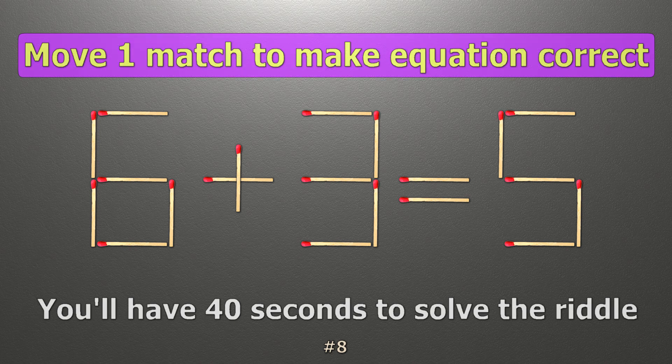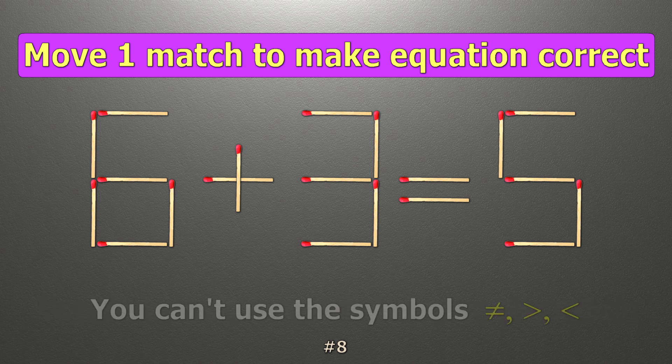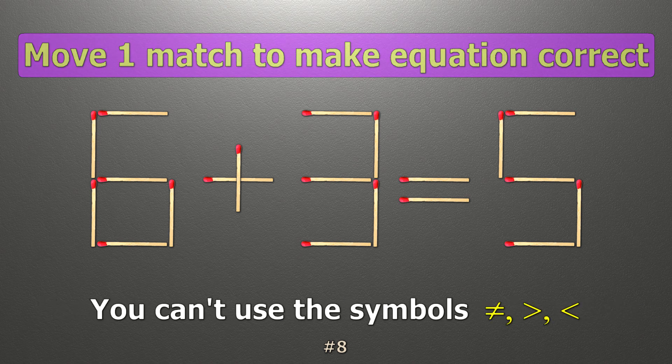We have the equality 6 plus 3 equals 5. Our equality is wrong. We need to move one match to make our equality correct.